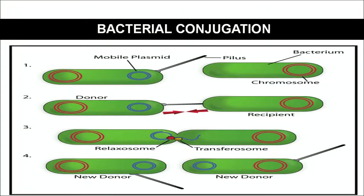Adjacent to the F+ bacterium is another bacterium with only the main genome — no plasmid. In the F+ bacterium, a pilus is formed and attaches to the F- bacterium. Once the pilus is formed, genetic material is transferred from the F+ donor to the F- recipient bacterium. Since plasmid is double helical, one template remains in the donor and the other is passed to the recipient, which later makes its own copy.